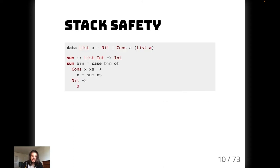To get an idea of what we're doing, let's look at a basic example. This is a common list data type, exactly what's in the core libraries. The function `sum` pulls out integers and adds them together. It has one recursive call, but it's not in tail position — it calls itself and then has to take the result and add X to it. So this would not be optimized by the compiler.